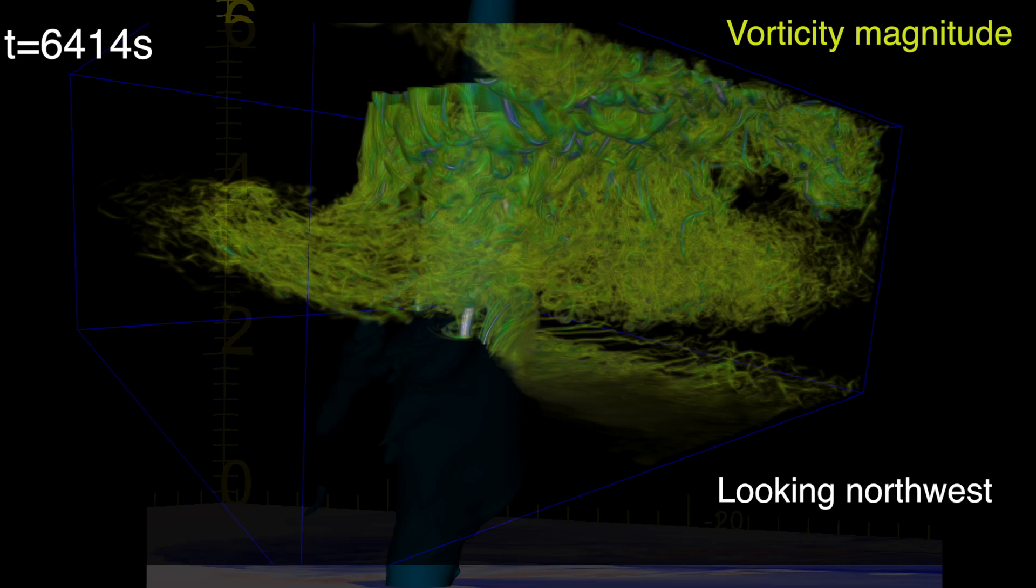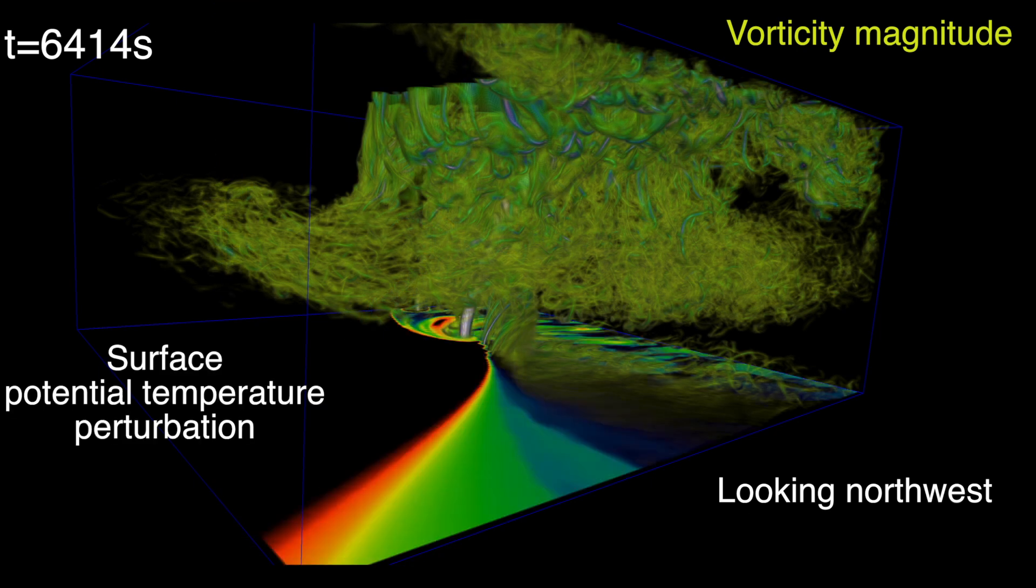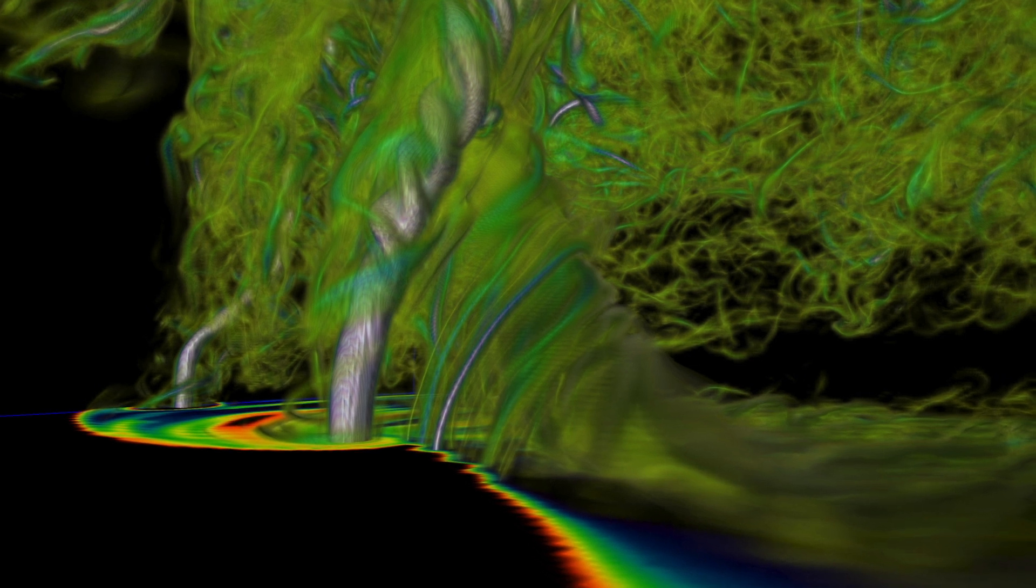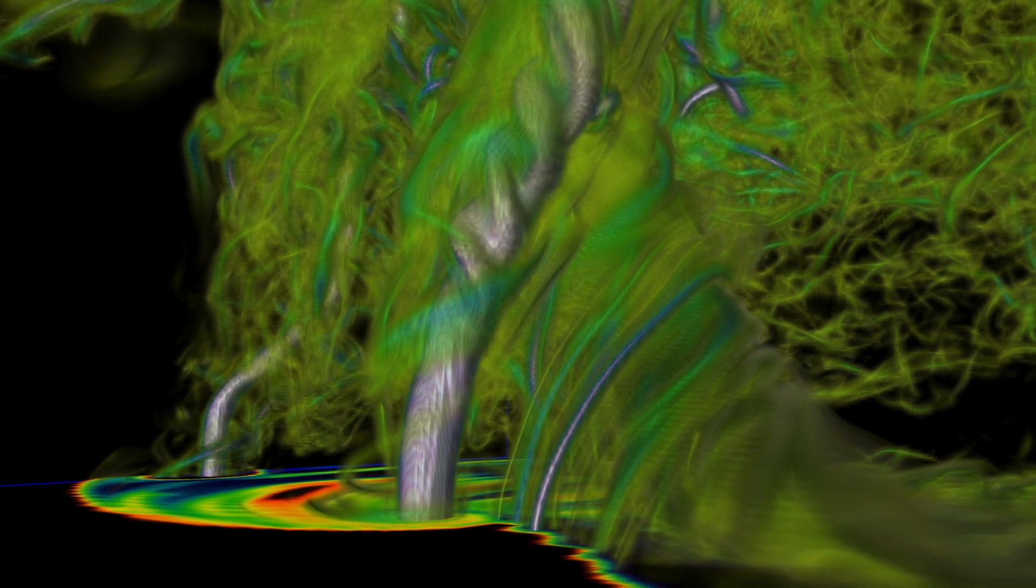We now explore the vorticity field at a snapshot in time while the tornado was producing winds exceeding 120 meters per second at the ground. We highlight the structure of the storm-cooled air along the boundary. Zooming in, we can see the train of vorticity, several small vortices that will merge with the tornado, and the tornado itself which is exhibiting vortex breakdown aloft.